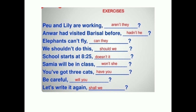Here are some exercises. 'Pew and Lily are working, aren't they?' 'Anwar had visited Barisal before, hadn't he?' 'Elephants can fly, can't they?' 'We shouldn't do this, should we?' 'School starts at 8:25, doesn't it?' 'Samia will be in class, won't she?' 'You have got three cats, haven't you?' 'Be careful, will you?' 'Let's write it again, shall we?'